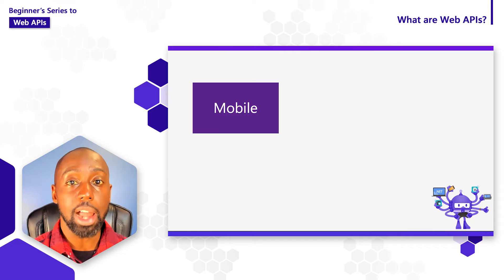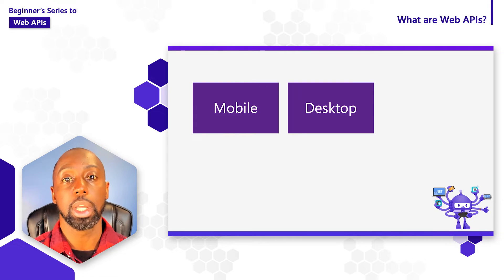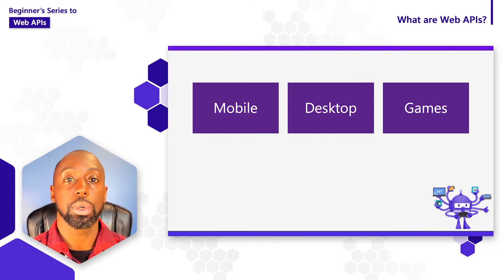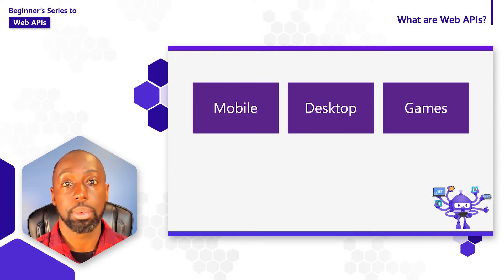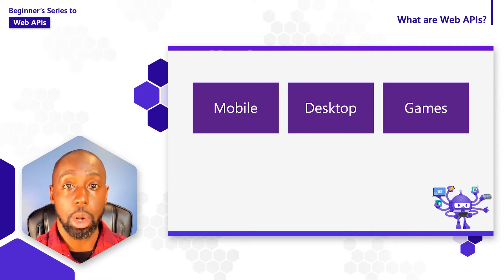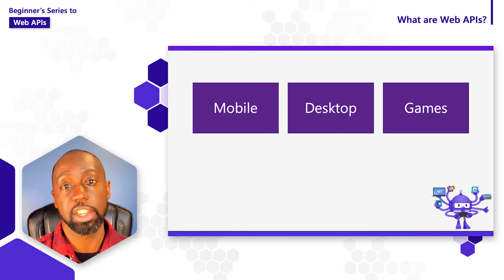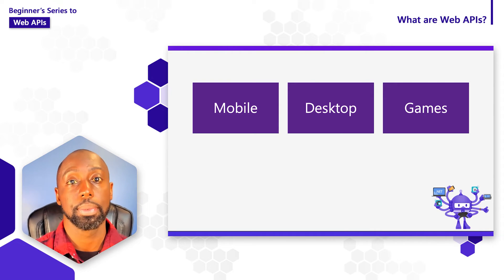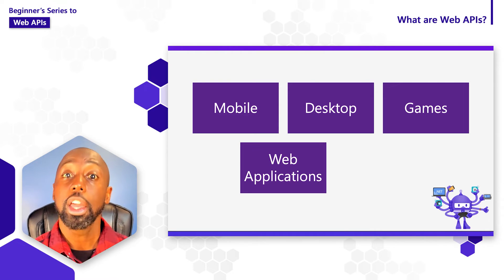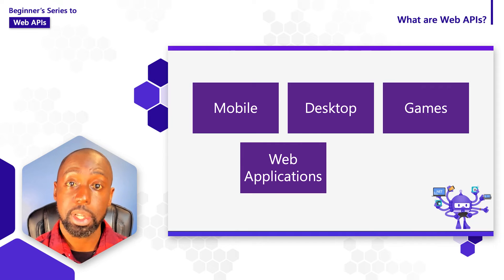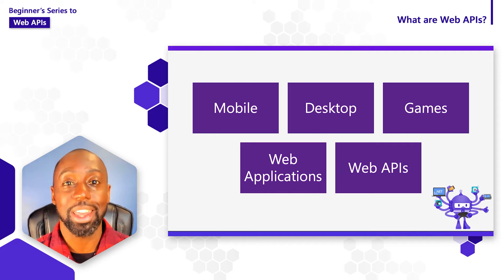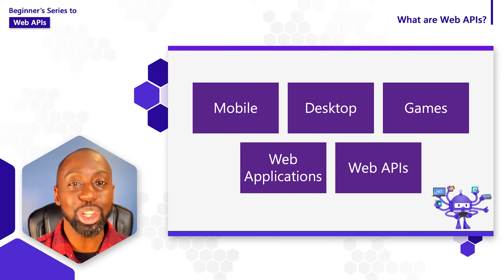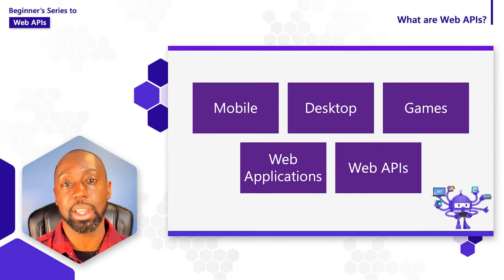Now it turns out regardless of the app that you're building, you can make use of a web API. So whether you're building a mobile app or a desktop app or a game, you can do things like leaderboard tracking, managing contacts, looking up business information or recipe information. It also turns out that web apps can use web APIs and web APIs could use web APIs too, which has a really cool dynamic to how we could put these applications together.